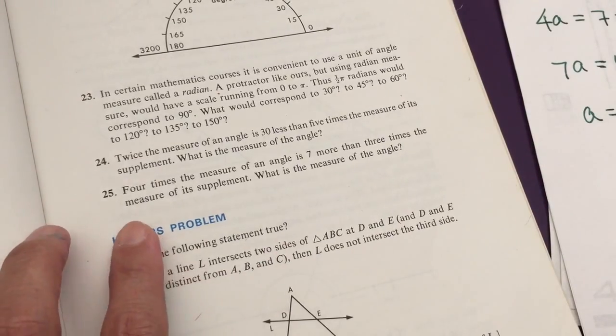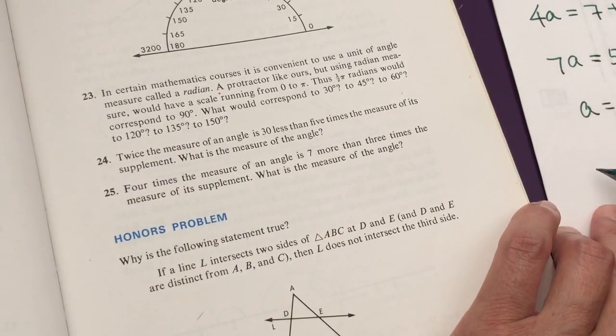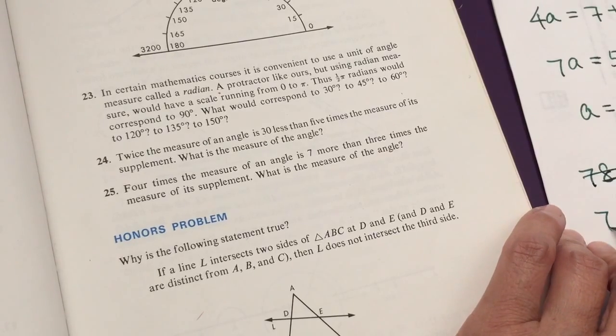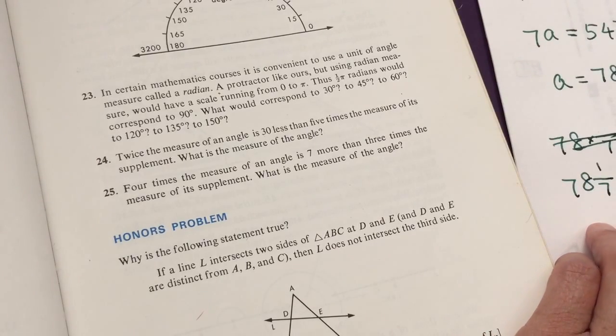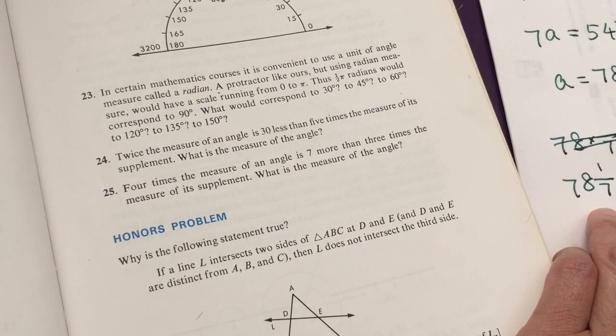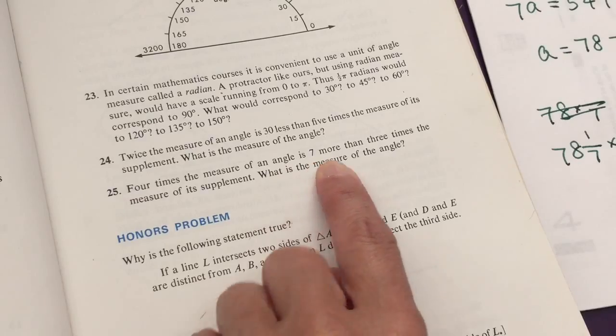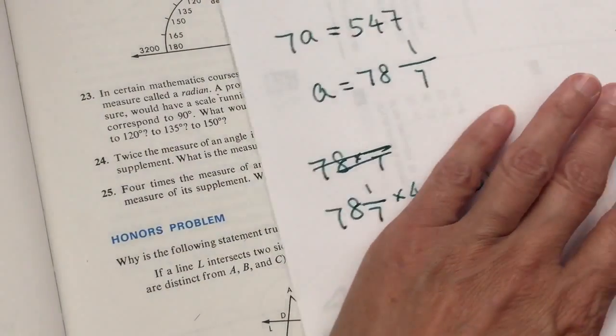So A equals 78 and 1/7. Now we go back to the problem. So 4 times of A, 78 and 1/7 times 4 equals 312 and 4/7. And more than 3 times the measure of its supplement.